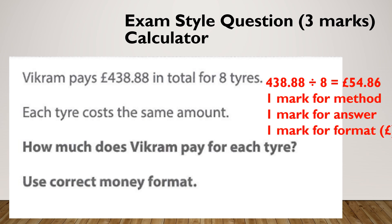If he's paying this amount in total for eight tyres and I want to know what each tyre costs — this is the cost of eight, I need the cost of one — it's a divide. Again, one mark for your method, one mark for your answer, and one mark for your pound sign.